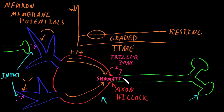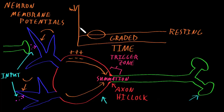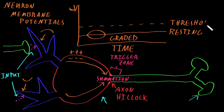Summation is the way neurons process information from their inputs — graded potentials traveling to the axon trigger zone. The membrane potential at the trigger zone may be going up or down from the normal resting potential, and these graded potential changes will usually be brief. However, if the membrane potential at the trigger zone goes over a certain value — which may be a little different for every neuron — this value is known as the threshold potential.